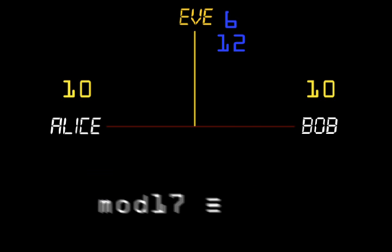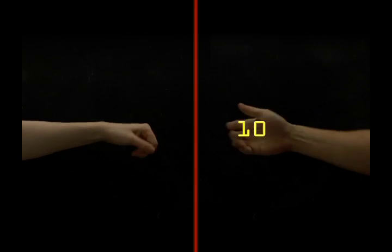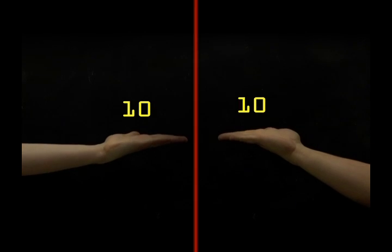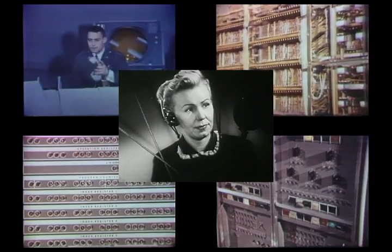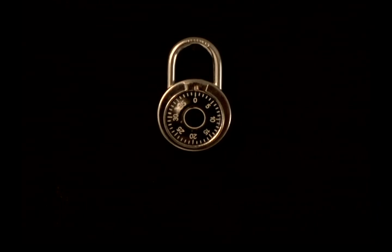They both end up with 3 raised to the power of their private numbers. Without one of these private numbers, 15 or 13, Eve will not be able to find the solution. This is how it's done. While Eve is stuck grinding away at the discrete logarithm problem, and with large enough numbers, we can say it's practically impossible for her to break the encryption.